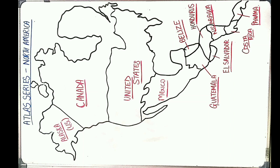You can learn them easily. The four major countries are Alaska, Canada, United States, and Mexico. Repeat with me: Alaska, Canada, United States, Mexico.